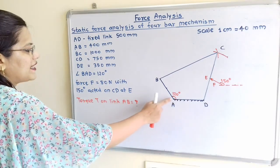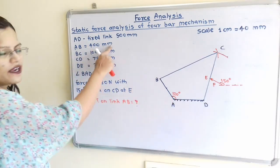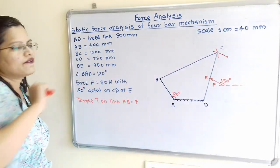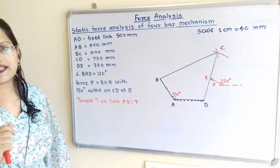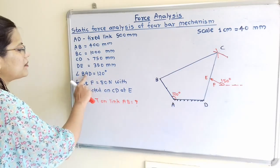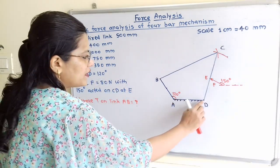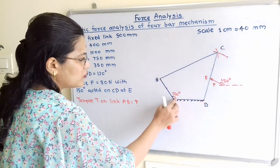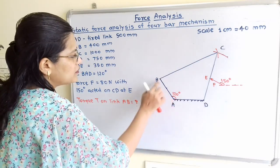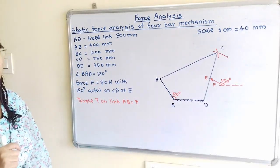Next is link AB, which is 400 mm. So 400 divided by 40 equals 10 cm. The angle BAD is also mentioned as 120 degrees. So we take this horizontal line, measure 120 degrees, and at that angle we draw link AB equal to 10 cm.